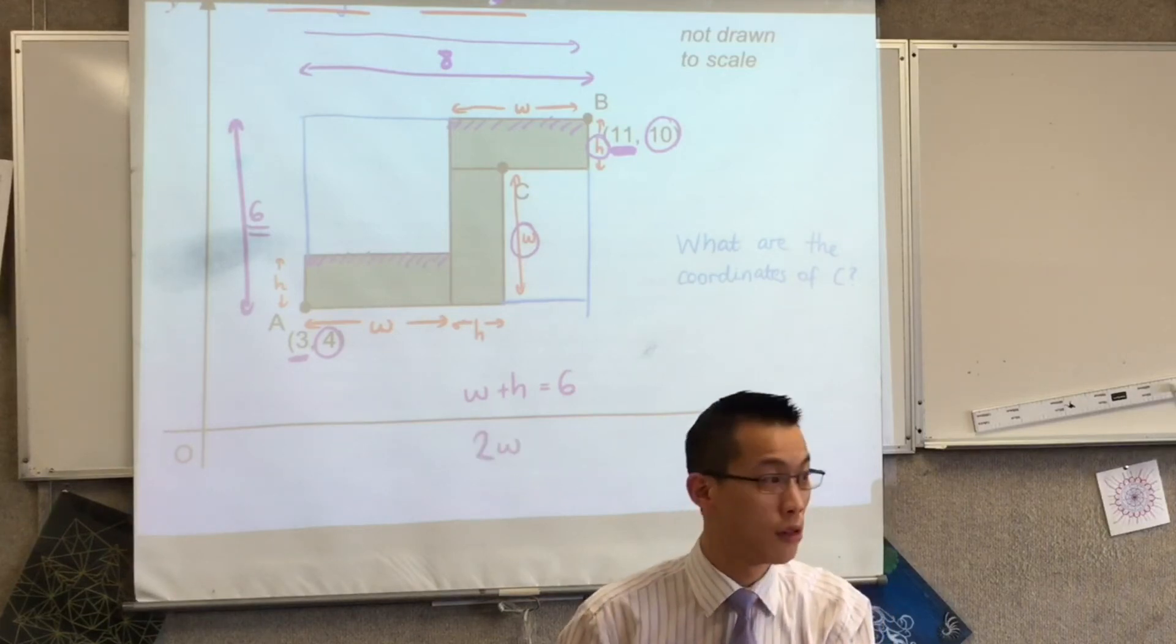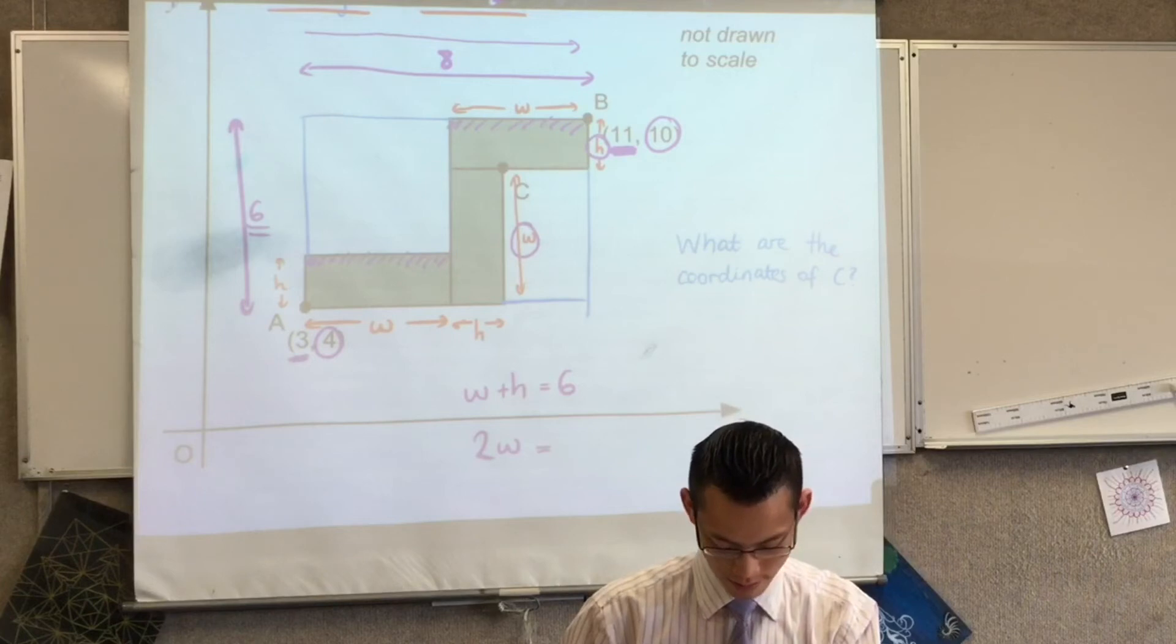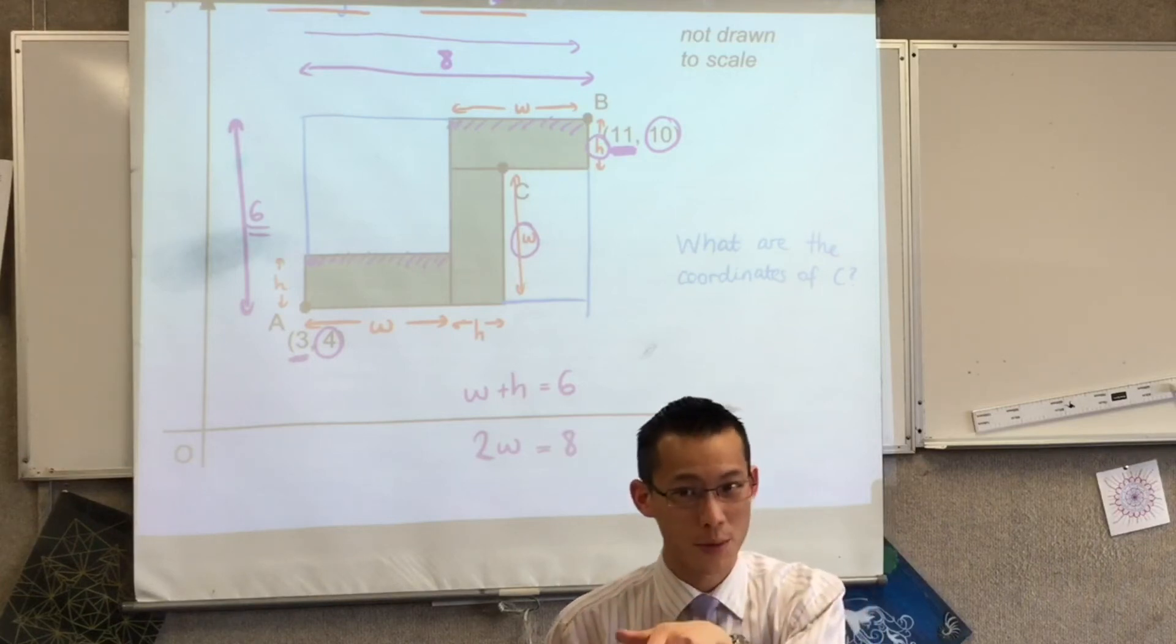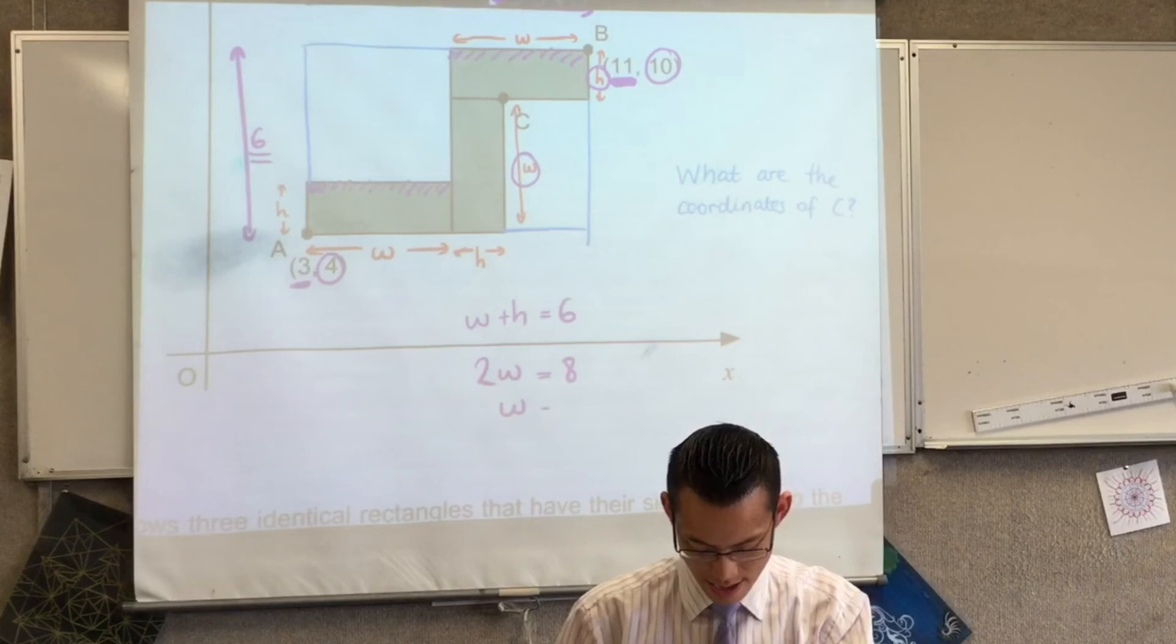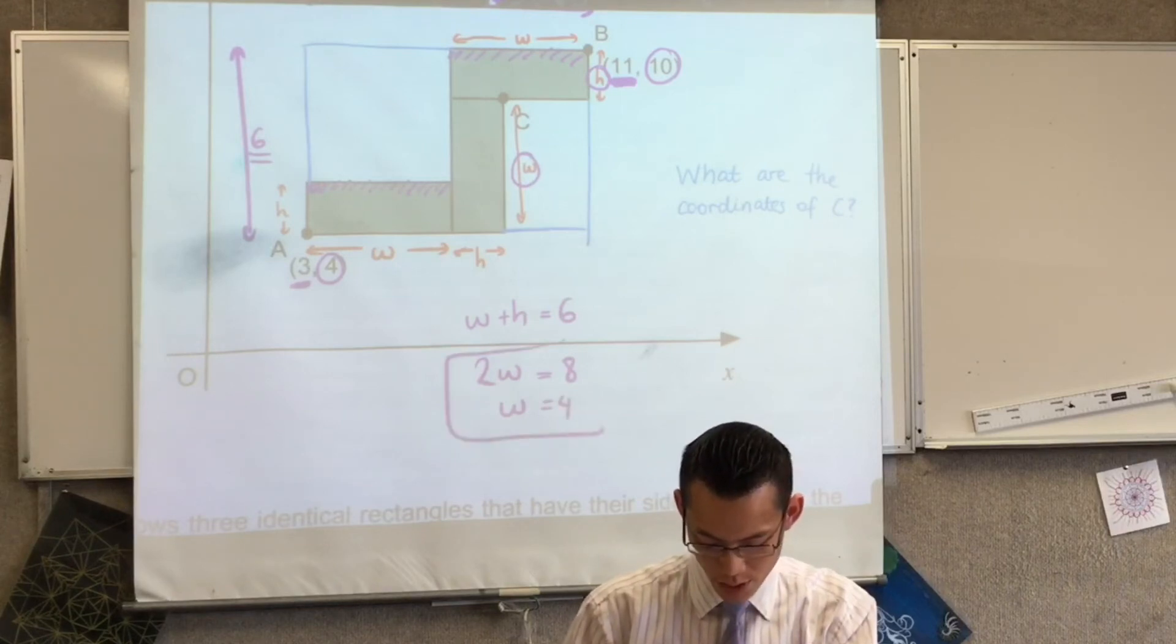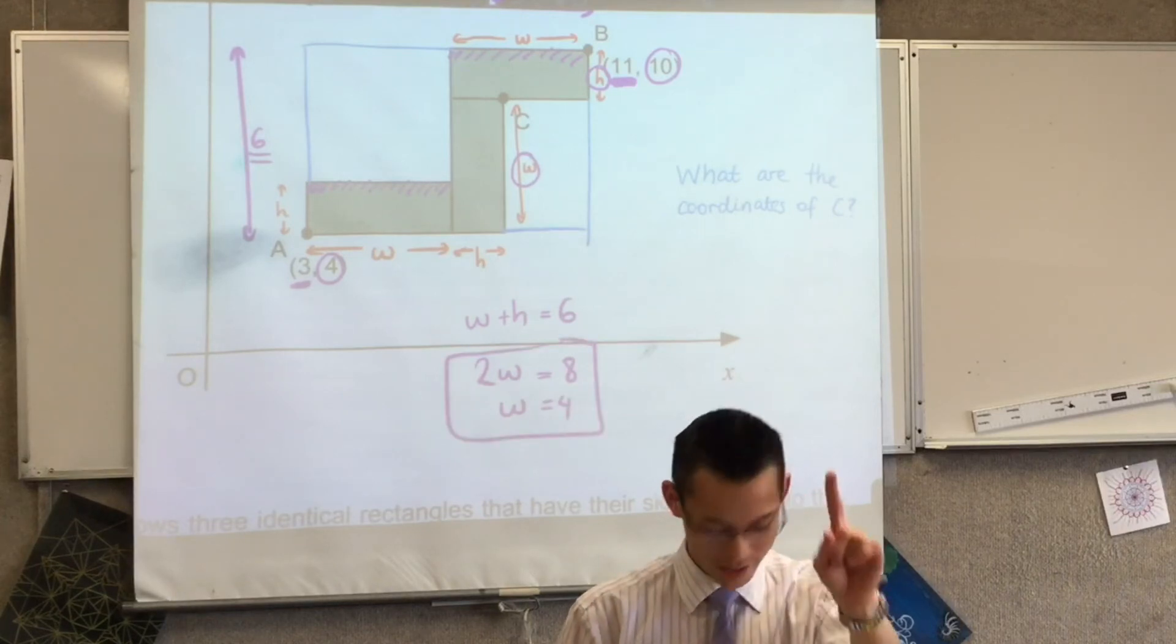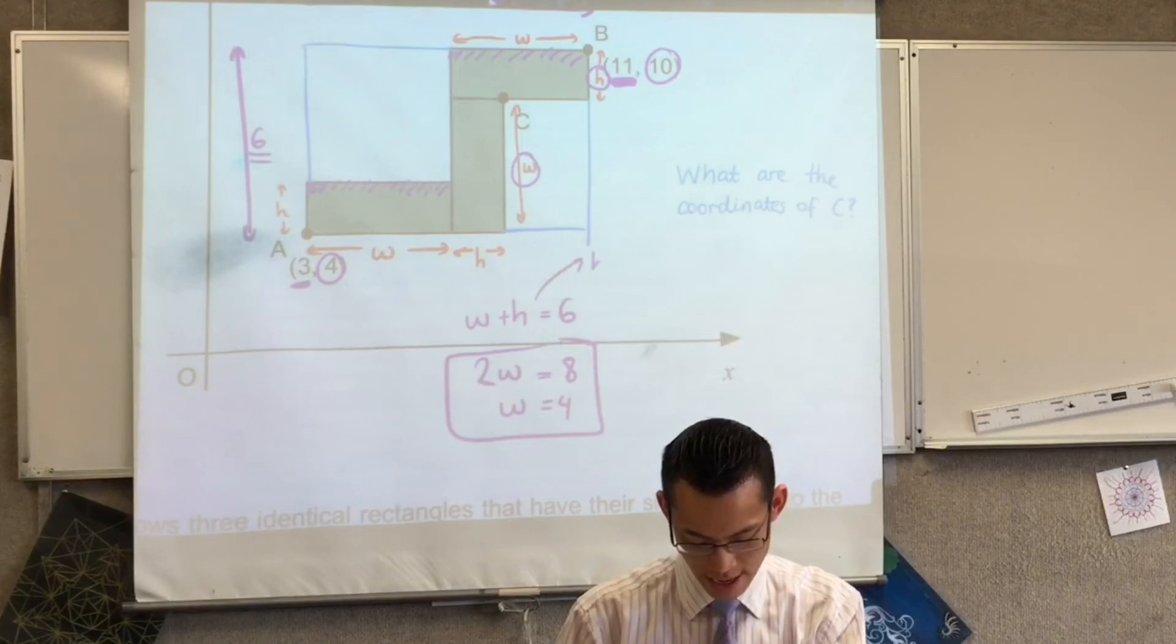Two lots of W is, uh, so two lots of W is eight. So one lot of W, W is four. Now that you know what W is, what's H? H is two because you can put it into here.